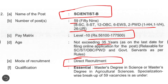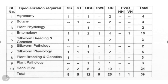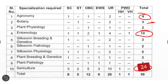Qualification for Scientist B post: MSc in Agriculture Science is essential. Posts are categorized by specialization — for Agronomy total 4 posts, Botany 3, Plant Physiology 2, Entomology 10, and Sericulture 4. Overall total 59 posts are available for this Scientist B post.